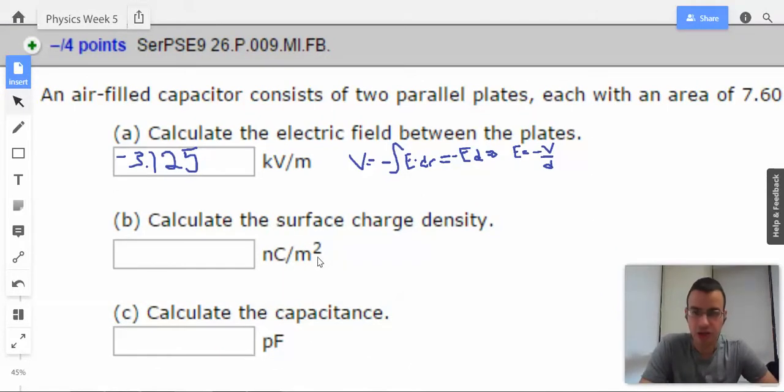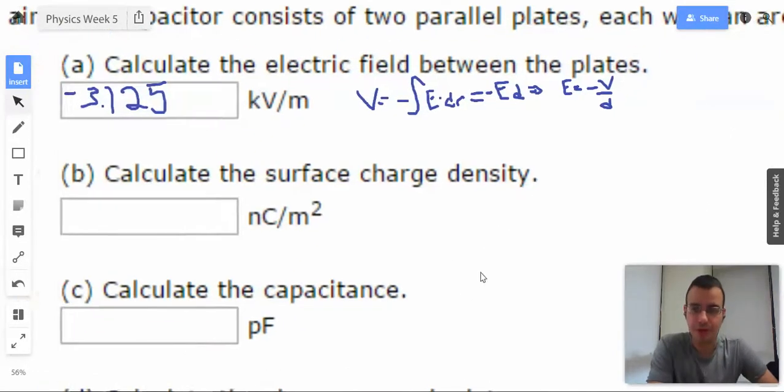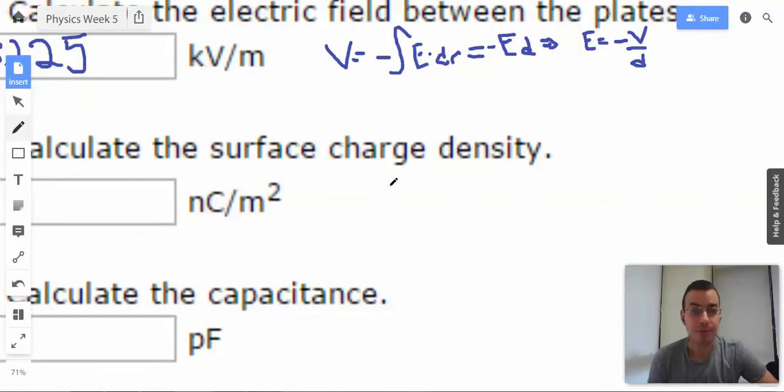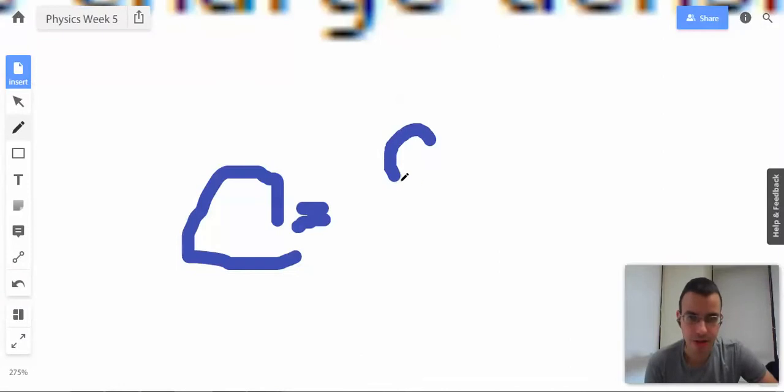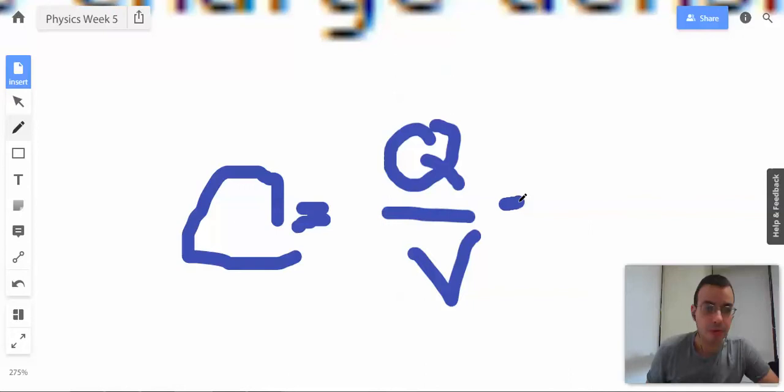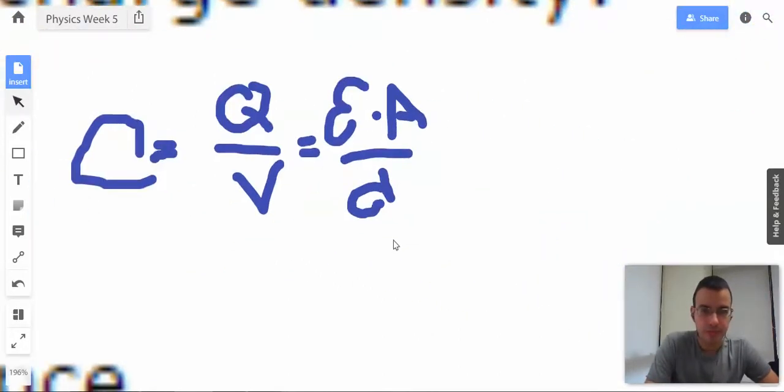Calculate the surface charge density. I really have no idea where to start with this guy, so I'm just going to start writing up equations. The capacitance is Q over V. We also know for a parallel plate capacitor that's going to equal epsilon times area over distance.